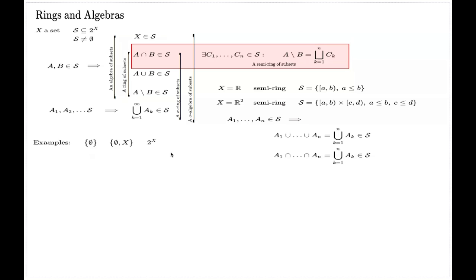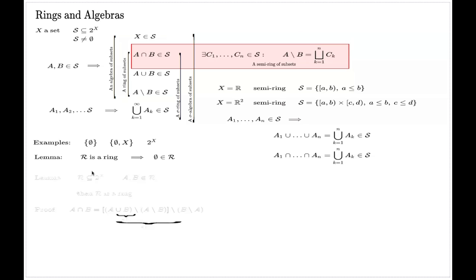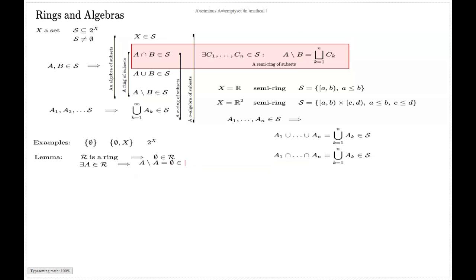These are good but trivial examples. We will need more advanced examples, and to build them we need some preparation. First, a lemma: if you have a ring, then the empty set will always be a member of that ring. The proof is trivial — a ring is non-empty so there is some element A. By the properties of the ring, the set difference of A with itself, which is the empty set, must also be an element of the ring. That's all there is to the proof.